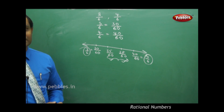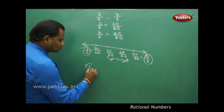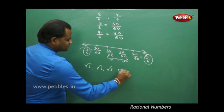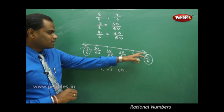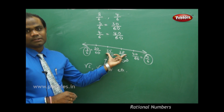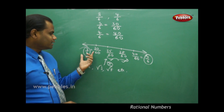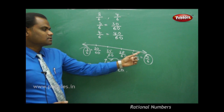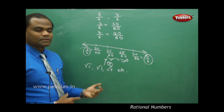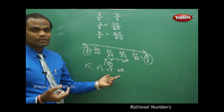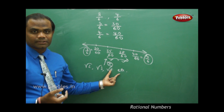When we consider real numbers, values like √2, √3, √5 cannot be represented on a rational number line. Only values in fractional form, decimal form, or strict integer form can be on a rational number line. The real number line includes all these irrational values, but the rational number line does not, because irrational numbers don't qualify as rational numbers.